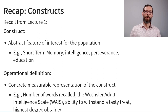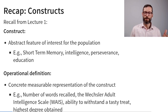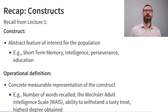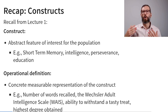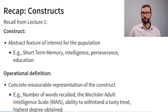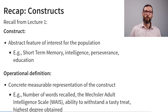Let's also recap what we discussed in Lecture 1 about constructs and variables. A construct is an abstract feature of interest for the population — for example, short-term memory, intelligence, perseverance, or education. Within a study, we have to use an operational definition in order to measure that property in all participants.